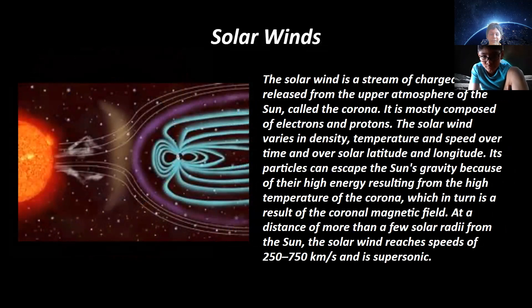Solar winds. Solar wind is a stream of charged particles released from the upper atmosphere of the sun called the corona. It is mostly composed of electrons and protons. The solar wind varies in density, temperature, and speed over time and over solar latitude and longitude.